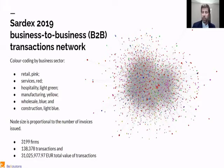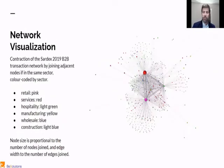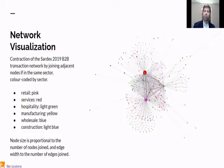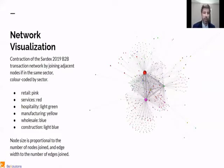We went to analyze this a bit further. If you try to see some structure in this, what we did is we joined the nodes that are close together and represent the same industry into one bigger node. You can see there is a lot of cooperation in the services industry — the big red node — a lot of cooperation in retail (the pink node), cooperation in hospitality, and a bit less in manufacturing and construction.